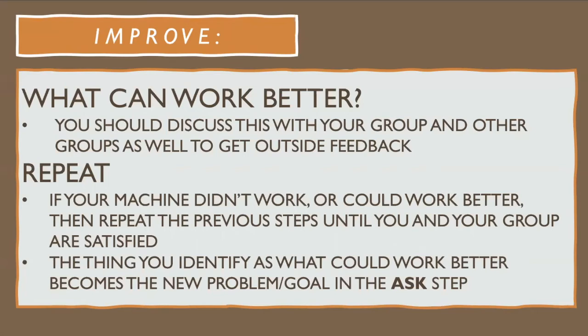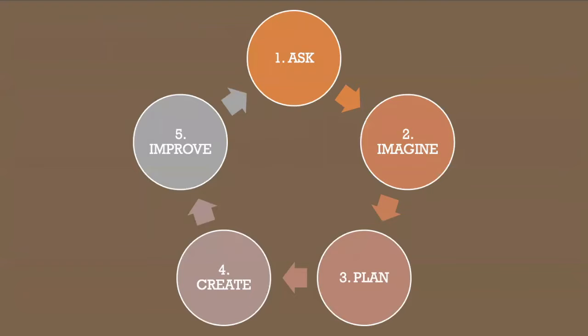Now, the repeat step, to just briefly go over what that means. It means that you will be going from improve, where you've determined that there's a problem with it, and you'll use that problem in the ask step. That is the problem that you define. Then you brainstorm solutions to it in step two with imagine. Plan out how you would do those solutions in step three. Execute the solutions in step four. And then finally, step five, you would want to test them and see if they work or not.